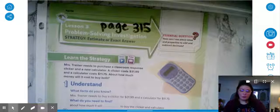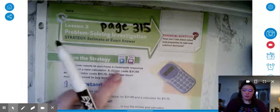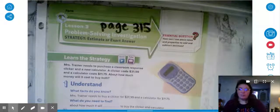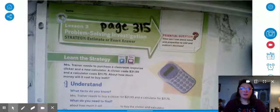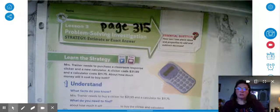Mrs. Traynor needs to purchase a classroom response clicker and a new calculator. A clicker costs $31.99 and a calculator costs $11.75. About how much money will it cost to buy both?